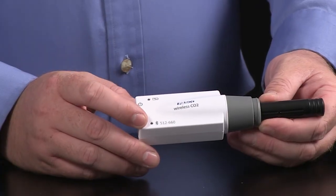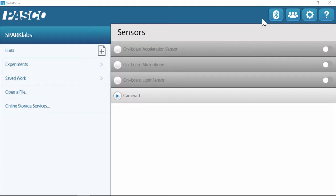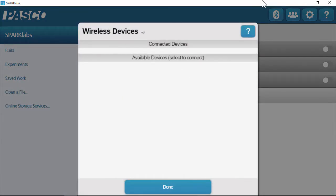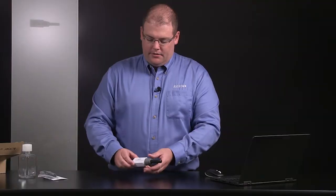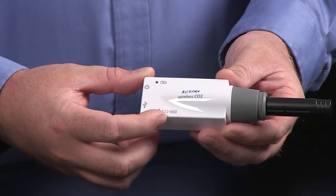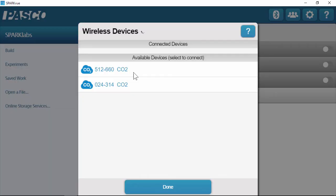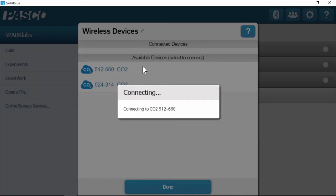Notice that the Bluetooth LED is blinking red, indicating that it's ready to pair. I'll launch SparkView and open the Bluetooth menu. My sensor should be at the top of the list. We can also match the six-digit ID number found on the sensor. I'll select that sensor to connect.